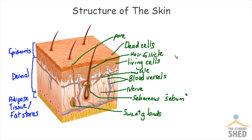The third layer is the adipose tissue or fat stores. This layer contains fat and also a supply of blood vessels. It is responsible for insulating your body from extreme temperatures. If you live in cold temperatures there would be much more fat accumulated in this area, but if you live in the Bahamas there wouldn't be as much excess fat stores. And so those are the three main layers of the skin.